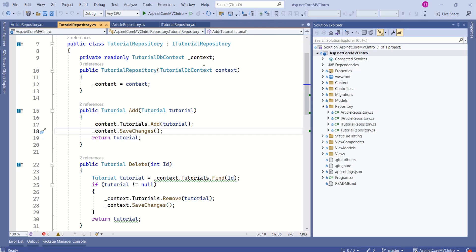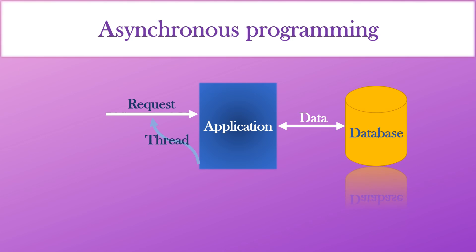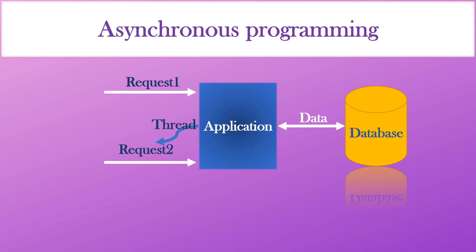Asynchronous programming best suits while working with a database. Even in asynchronous programming, whenever there is a request, the application assigns a thread to handle that request. While fetching data from the database, if there is another request, asynchronous programming utilizes that waiting period. It will go ahead and start handling that second request. When the database finishes its processing, it will go back to the first request and serve it. This is how in asynchronous programming, a thread is able to switch between requests.